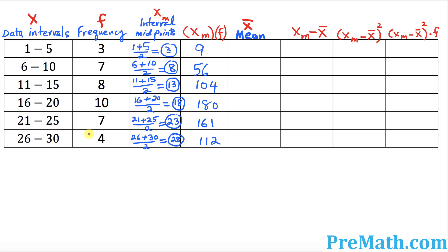Now in the next step, I want you to look at the frequency column and add all those numbers up. Sigma of frequency means add them all up — this is the same as n. When you add 3 plus 7 plus 8 plus 10 plus 7 plus 4, that turns out to be 39.